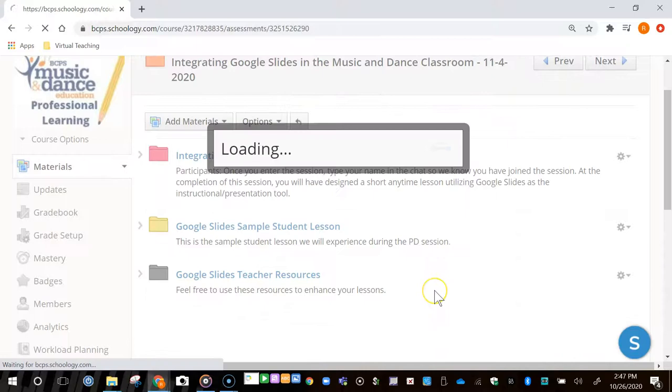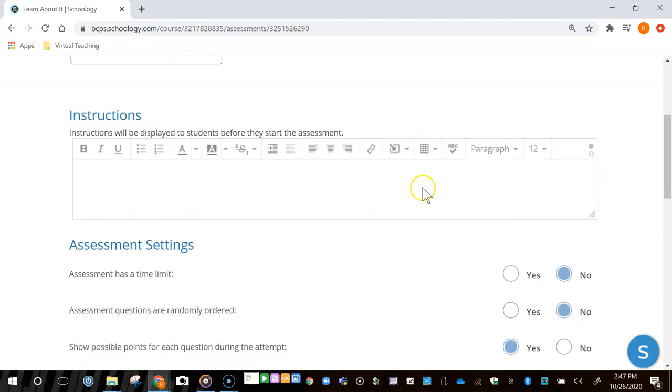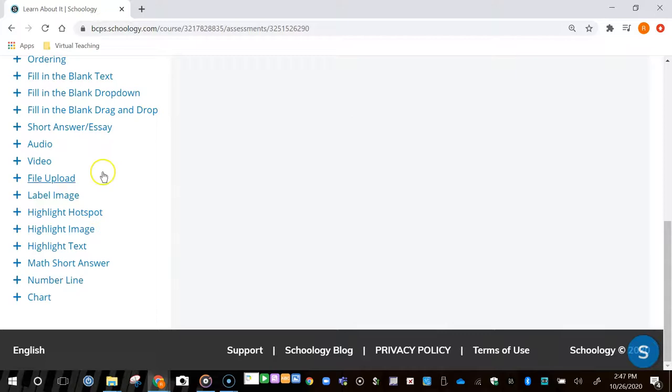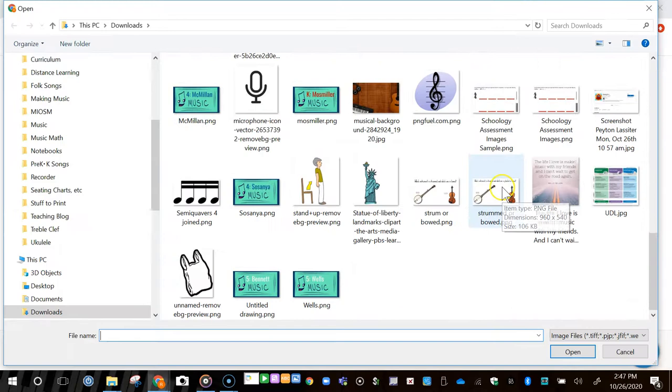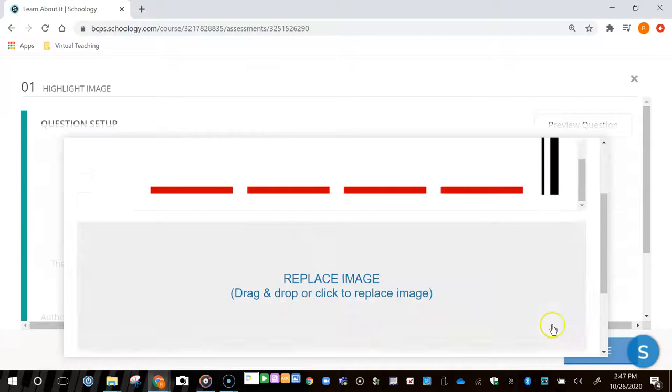Now that I've created an assessment, I'm going to add the highlight image question. When you go to Highlight Image, that's where you choose the PNG file you just created using Google Slides. I found my sample image on my computer and I'm adding it to the assessment.